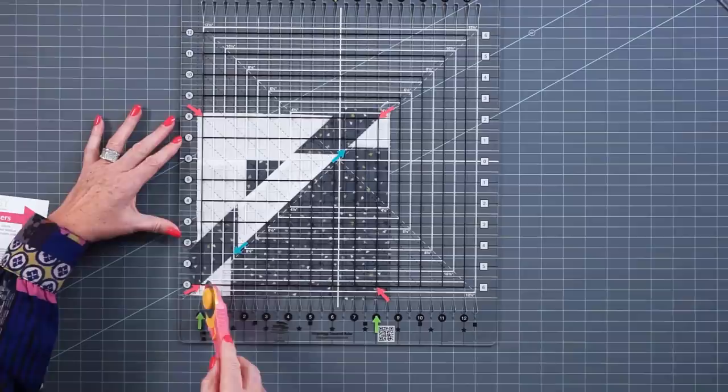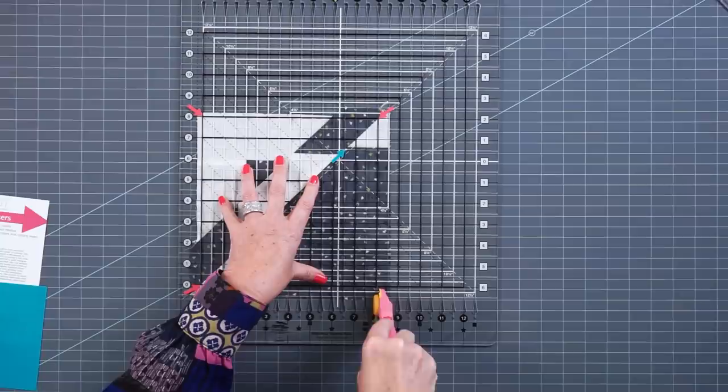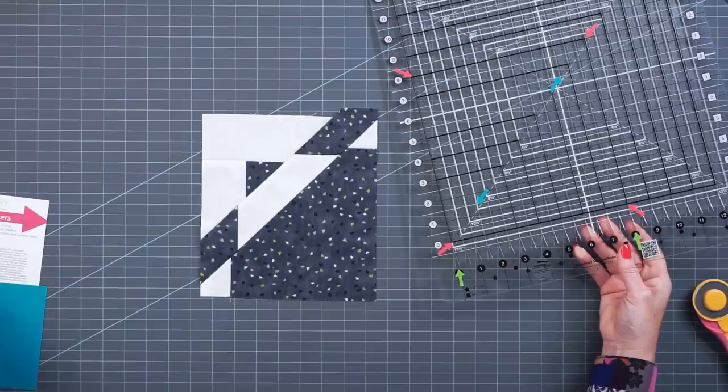So now I'm just going to trim, cut through the zero and then through the eight where I put my green arrows. The ruler will just hold the block in place and now we're just going to turn it.